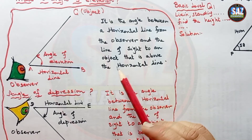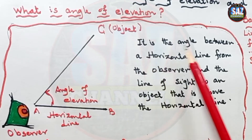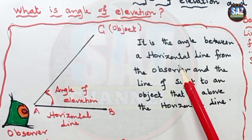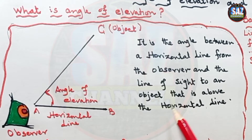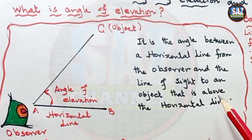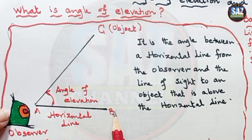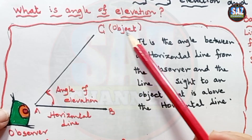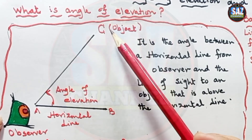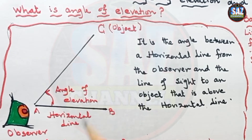Let's try to understand each concept one by one. The angle of elevation is the angle between the horizontal line from the observer and the line of sight to an object that is above the horizontal line. This is the position of the observer, this is the horizontal line, and the line of sight goes towards the object which is at the top. The angle formed between them is called the angle of elevation.